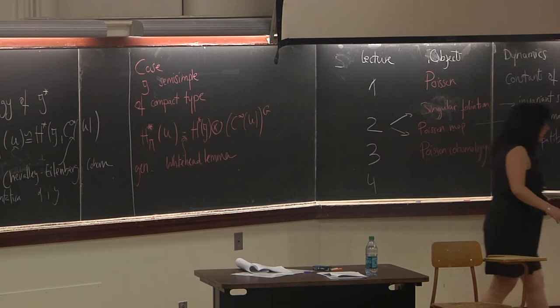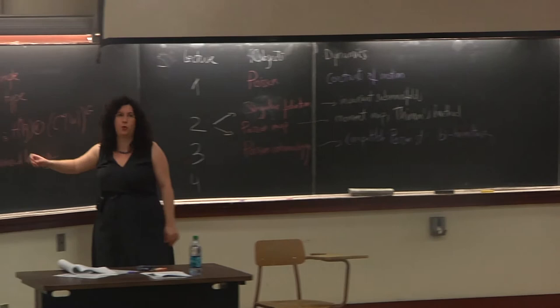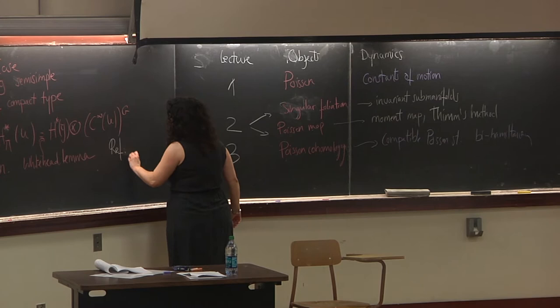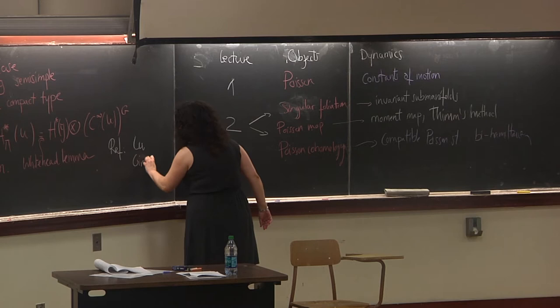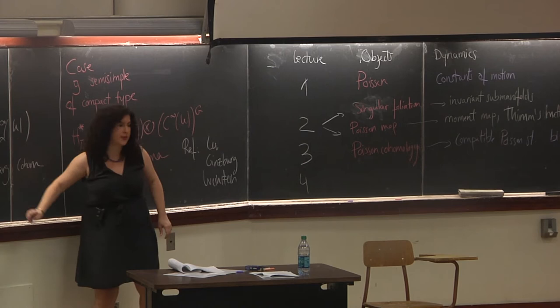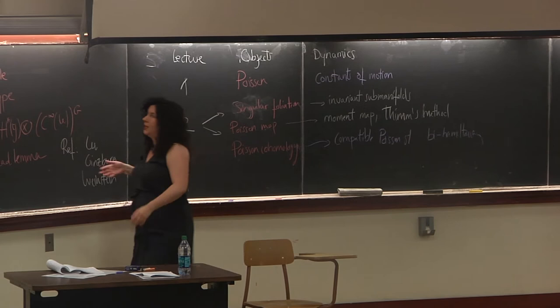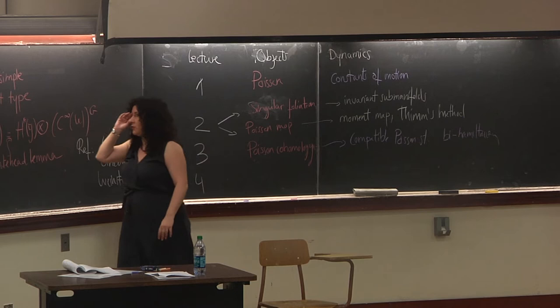We have an identification of Poisson cohomology with Chevalley-Eilenberg cohomology. In the case G semisimple of compact type, as discussed by Pavel, we can make this more explicit: we have an identification as a product where one factor is the Lie algebra cohomology and the other involves G-invariant functions. This requires a generalized version of the Whitehead lemma. References: this was done by Lu, by Victor Ginzburg, and by Weinstein himself, in the context of Poisson-Lie groups where the action to consider is the dressing action.